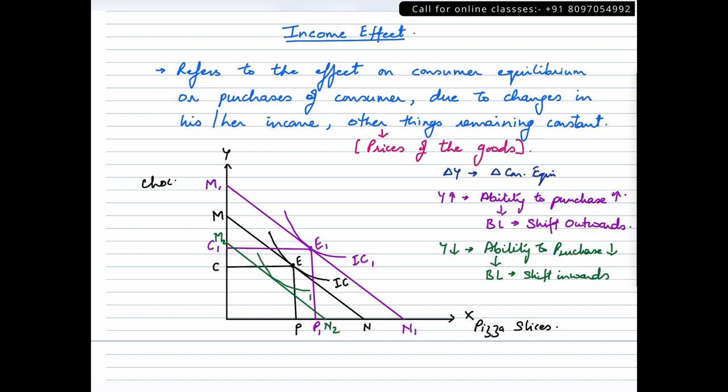In that case, there would be a new indifference curve that will be tangent to the new budget line. Let us draw the new indifference curve here. Let us say this is indifference curve 2, this point of equilibrium as point E2, and at this particular point, consumer is consuming P2 quantity of pizza slices and C2 quantity of chocolates.